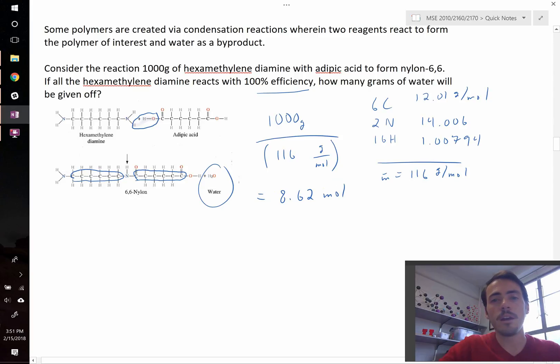Now that we know that, we know that we have the same amount of water that's being generated, so all we need to do is figure out how many grams of water correspond to 8.62 moles of water.